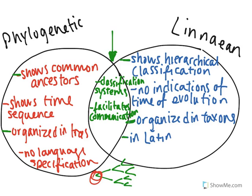Linnaean classification is also unable to show any indication of the times of evolution, whereas when you look at the phylogenetic tree, it's able to show a time sequence. Obviously this species at the beginning of the tree is going to be the ancestor of those that come after, whereas the Linnaean classification shows no sort of timeline or time sequence like that.